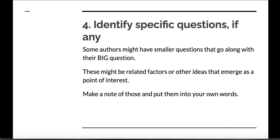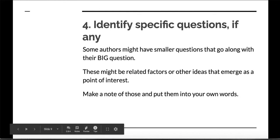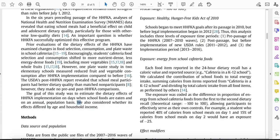And then are there any specific questions? I noticed one specific question in my article that goes along with the big question about the dietary impacts of this policy. There might be related factors or other ideas that emerge as a point of interest, so we want to point them out and make note of them. There's this other one right here, and this is my more specific question: we also considered whether its effect differed by age and household income. So there's two specific questions—whether the dietary effects of school foods eaten differed by age and household income. They're also going to be looking at those specific factors.